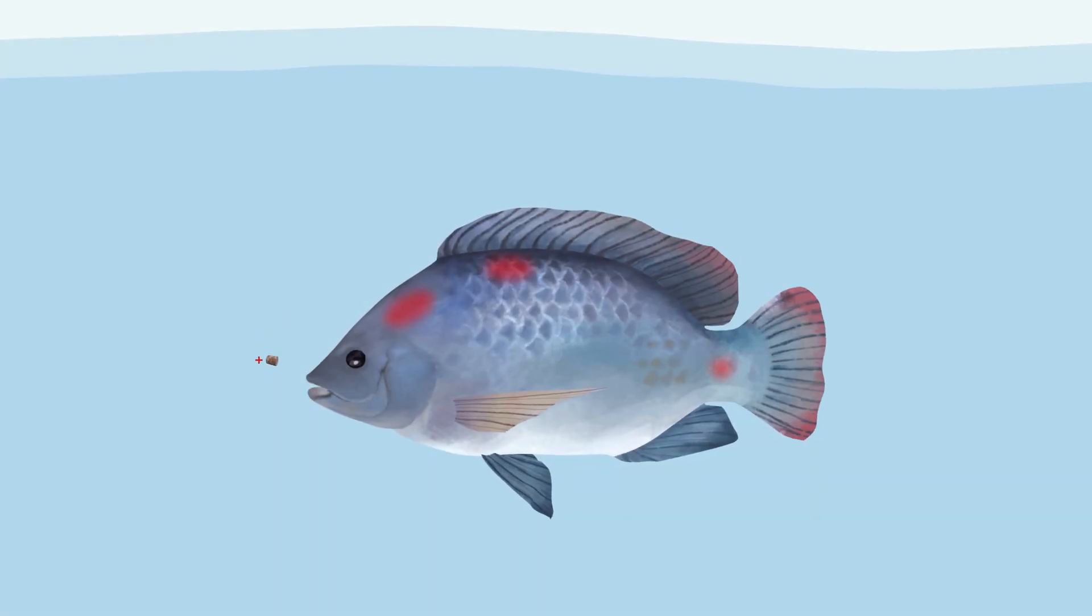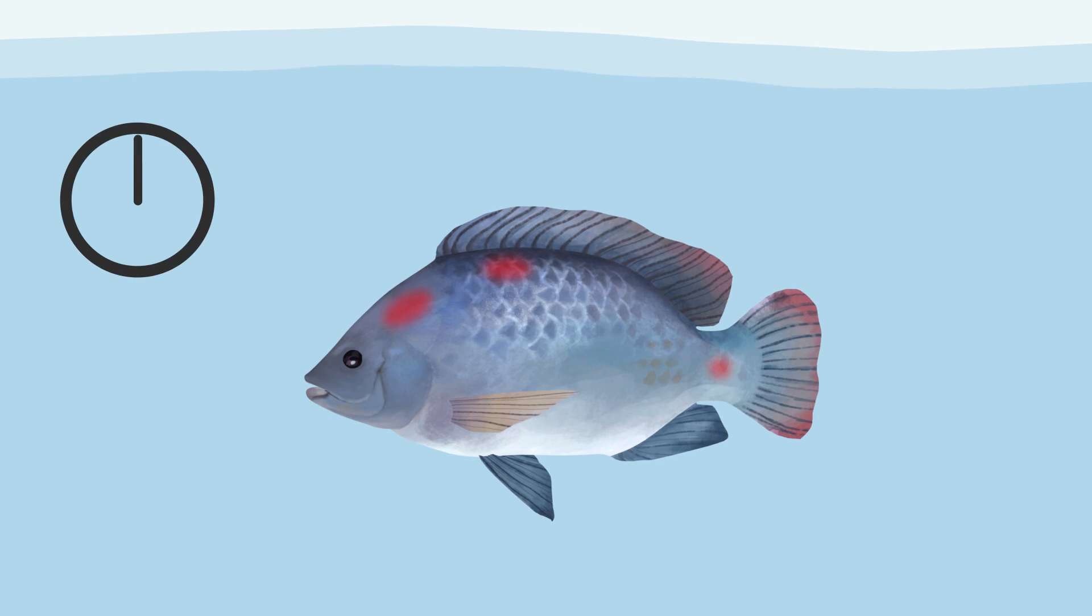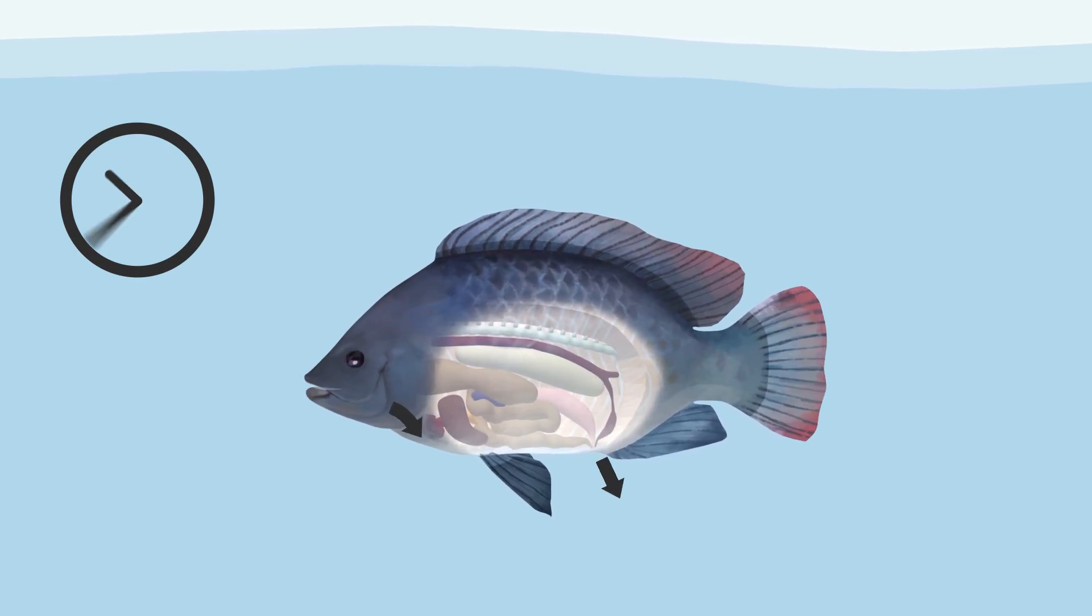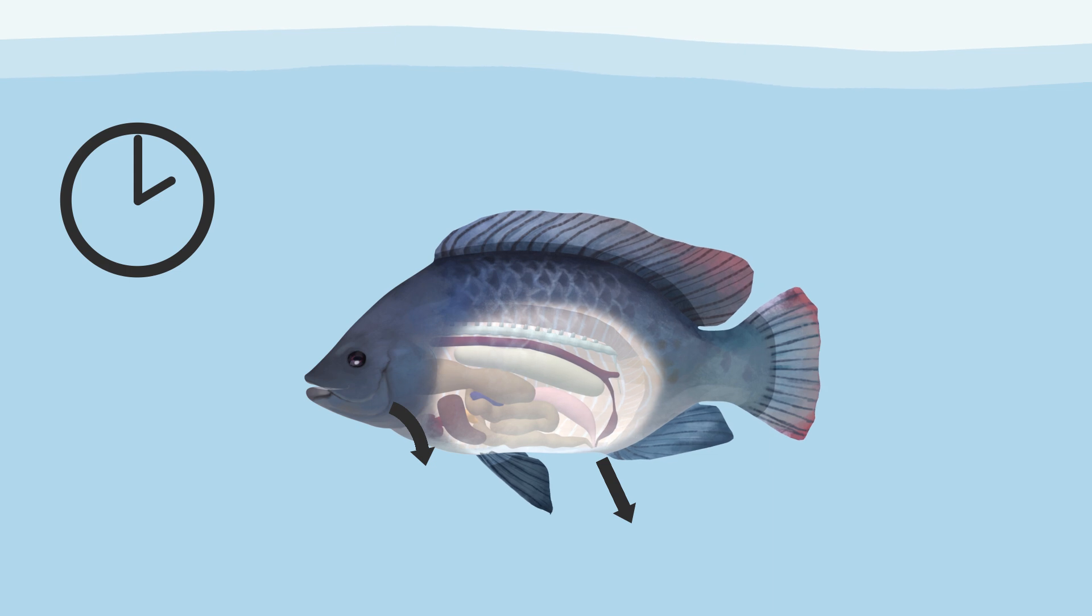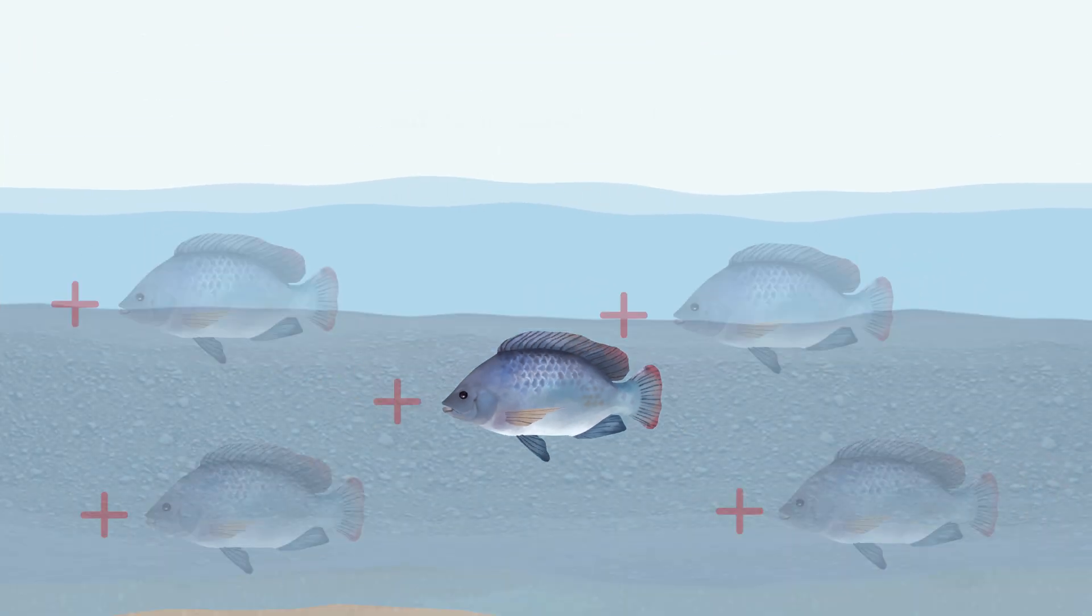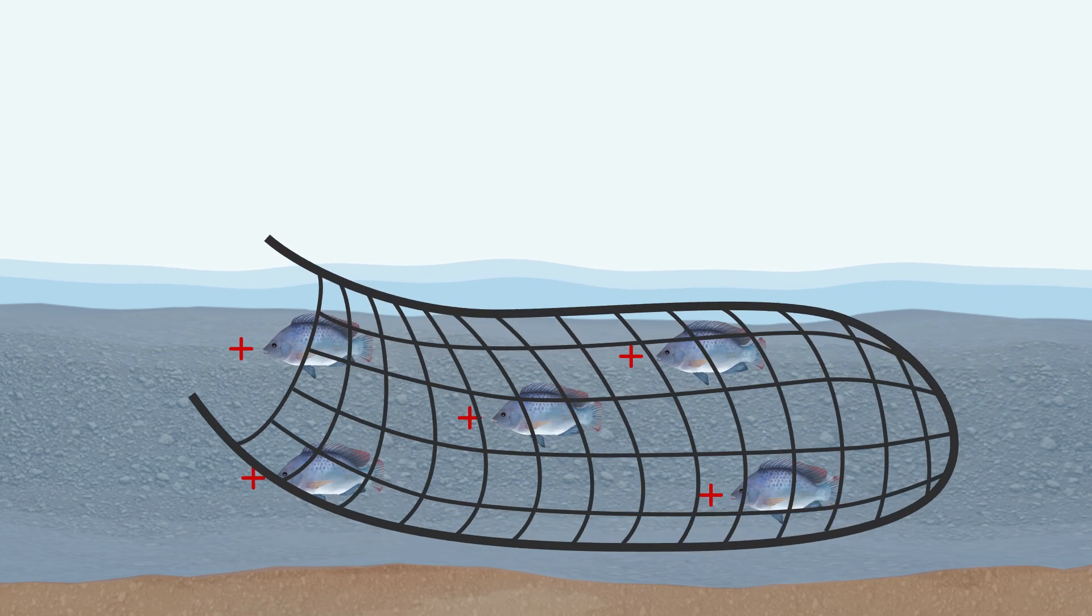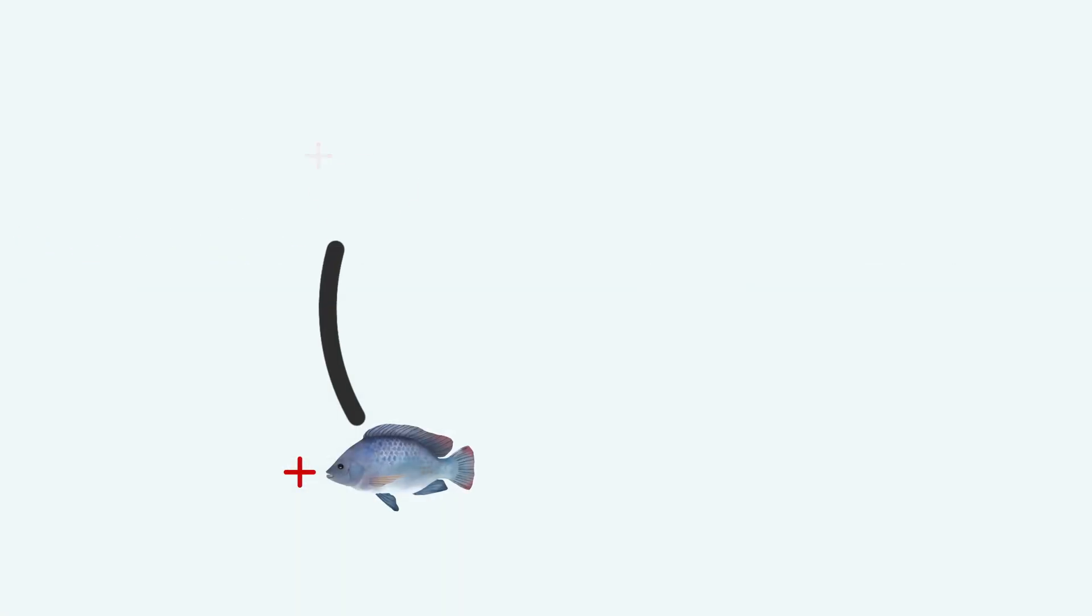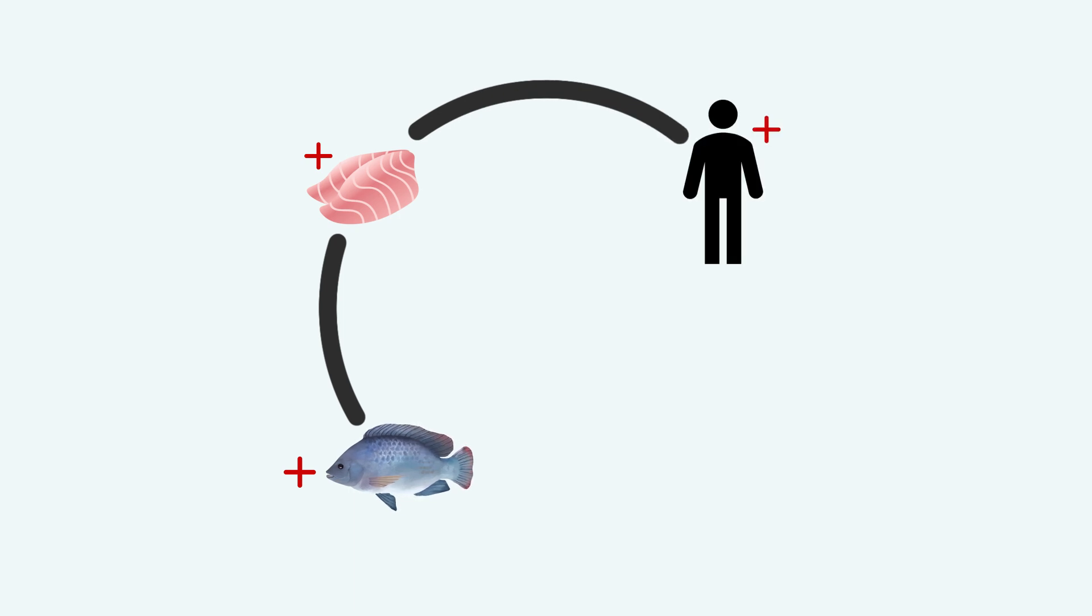When fish are given antibiotics, it takes time for the drugs to be metabolized and eliminated from their bodies. This period is known as the withdrawal period. As a farmer, you want to avoid harvesting fish that still contain antibiotic residues, as this may lead to humans being exposed to antibiotics which could affect their own gut bacteria and contribute to the development of AMR.